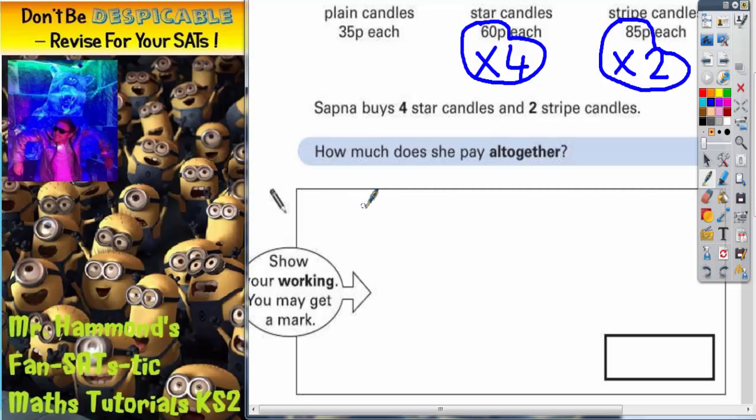So first job, we want 60p times four. Zero times four is zero. Six times four is twenty-four. Put your four in, carry your two, but because there's no columns left we can just put the two straight in. So for her star candles she pays two hundred and forty pence or two pound forty, whichever you prefer.